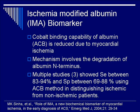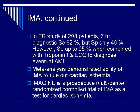Ischemia-modified albumin (IMA) is a cobalt-binding measurement of albumin, with sensitivity shown to be 83-94%. In an ER study of 208 patients, the three-hour diagnostic sensitivity was 82%, but specificity was only 46%. However, in conjunction with troponin I and ECG, the sensitivity rises to 95%.